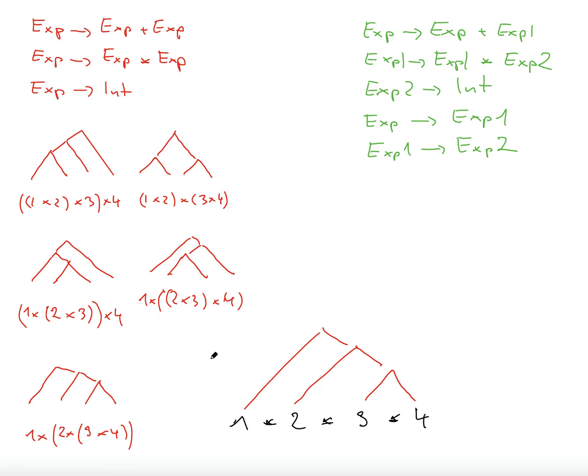So we do 3 times 4, and then times 2, and then times 1. So we have 5 different parse trees.